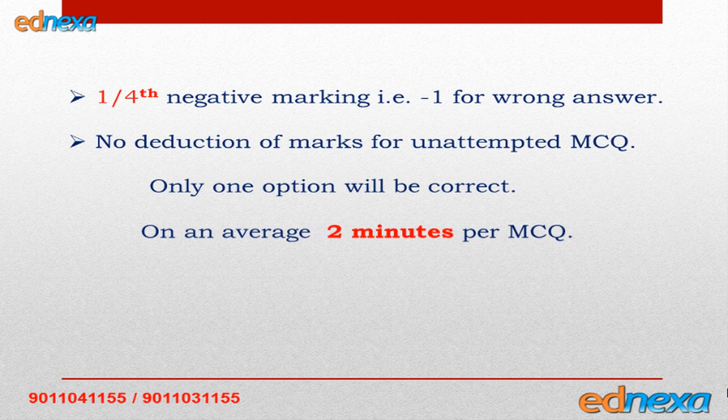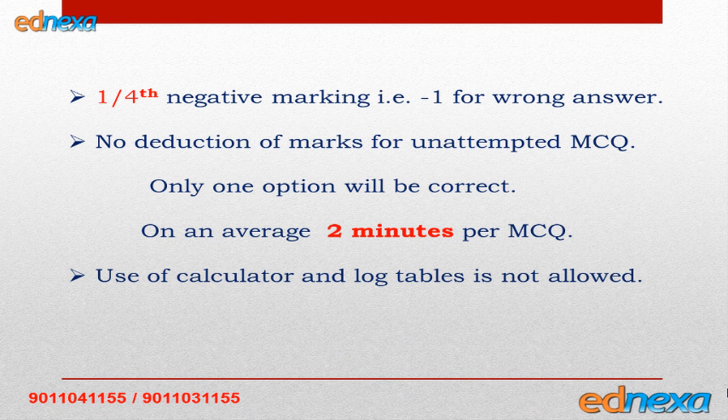In the 2013 exam there were in all 90 multiple choice questions: 30 on physics, 30 on chemistry, and 30 on mathematics. The total marks were 360. The duration was three hours, that is 180 minutes. This means on an average there were only two minutes for each question.